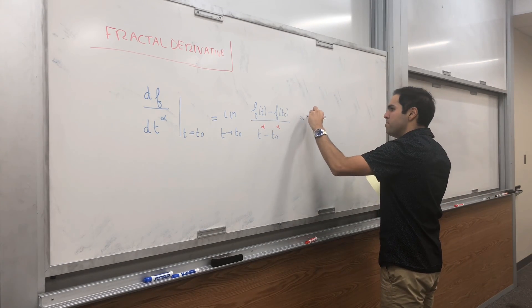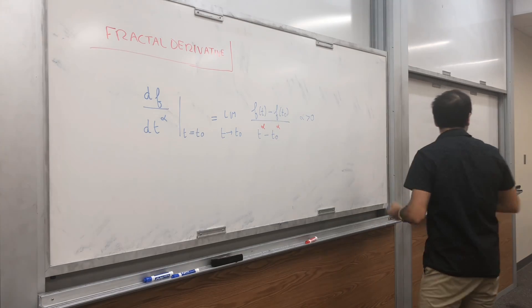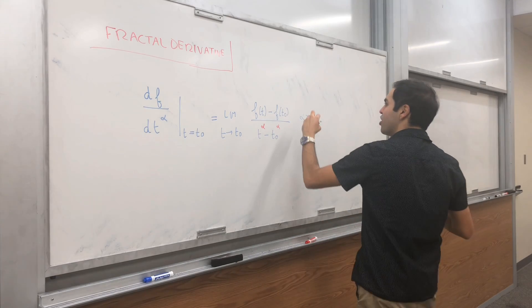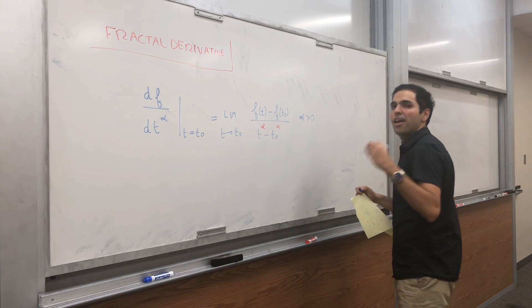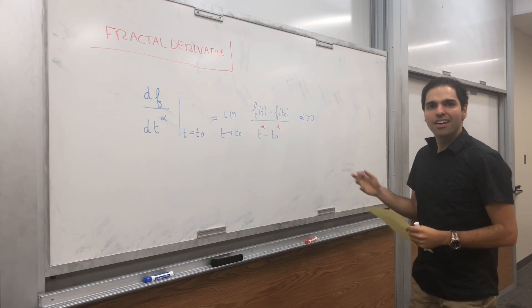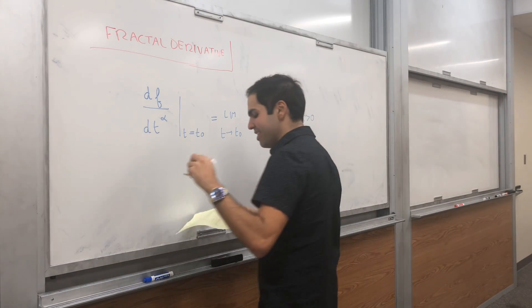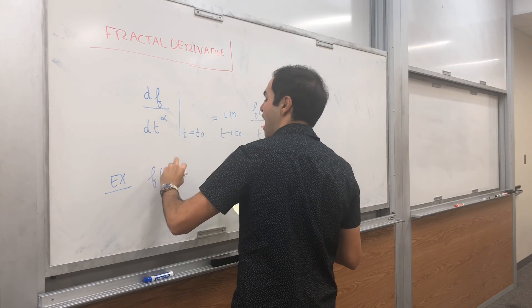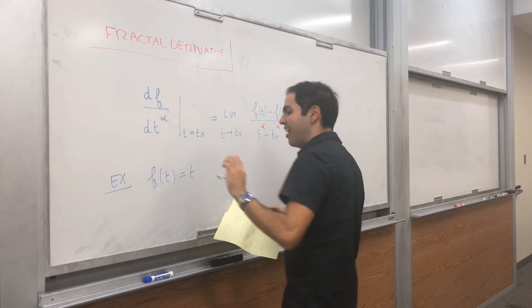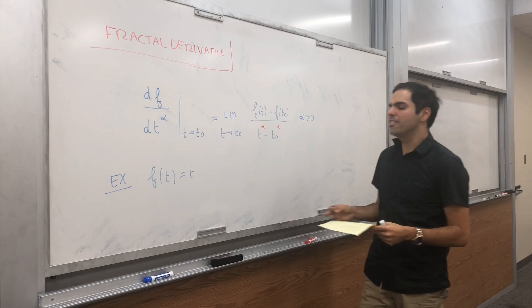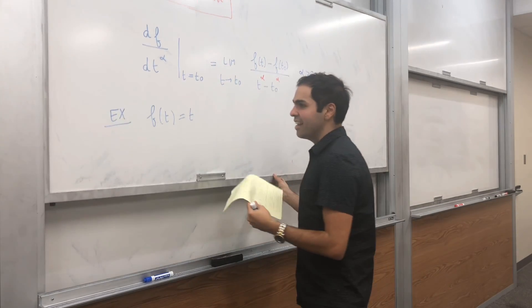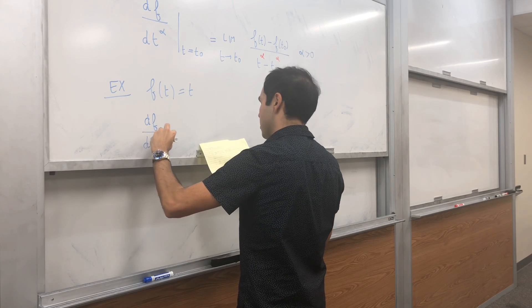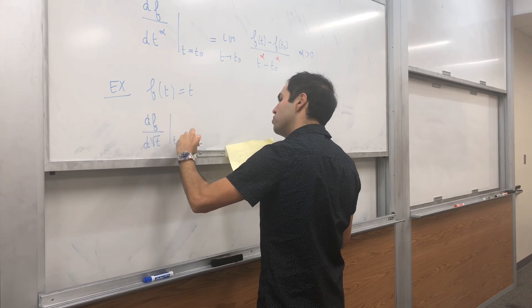And alpha here is any positive real number. Let me just give you a couple of examples and then just an application of this. So, for example, let's see what the, in this case, let's still call it half derivative. Again, not quite the same as half derivative in my other video. Then, let's take the derivative of f with respect to square root of t at t goes to t naught.